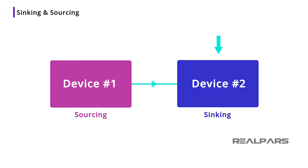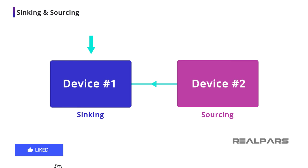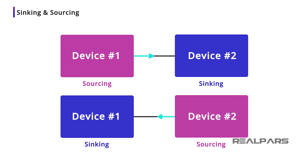What if the current is flowing from device number 2 to device number 1? In this case, we say device number 2 is sourcing the current and device number 1 is sinking the current. In every situation where you have a current flow between two devices, one of the devices will be sourcing and the other will be sinking.